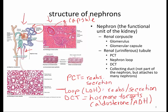The renal corpuscle combines two things: the glomerulus, which is the capillary bed, tucked within the glomerular capsule. The renal tubule — also known as the uriniferous tubule or nephron — includes the proximal convoluted tubule, the nephron loop or loop of Henle, the distal convoluted tubule, and the collecting ducts or medullary ducts. Technically the collecting ducts are not part of the renal tubule, but we will learn about them as if they were.